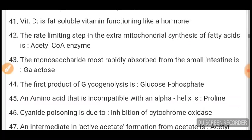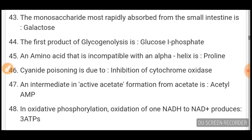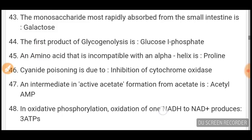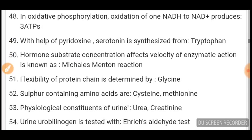Rate-limiting step in extramitochondrial synthesis of fatty acids is acetyl-CoA carboxylase enzyme. Monosaccharide most commonly absorbed from the small intestine is galactose — do not mark it as glucose. The first product of glycogenolysis is glucose-1-phosphate. An amino acid incompatible with alpha helix is proline. Cyanide poisoning is due to inhibition of cytochrome oxidase. An intermediate in active acetate formation is acetyl-AMP. In oxidative phosphorylation, oxidation of NADH to NAD+ produces 3 ATP. Serotonin is synthesized from tryptophan. Substrate concentration affecting velocity of enzymatic reaction is known as Michaelis-Menten kinetics. Flexibility of protein chain is determined by glycine. Sulfur-containing amino acids are cysteine and methionine.